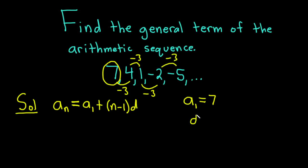So we can see right away that little d, which is called the common difference, is equal to negative 3. Now we just take these numbers, a sub 1 and d, and plug them into our formula.